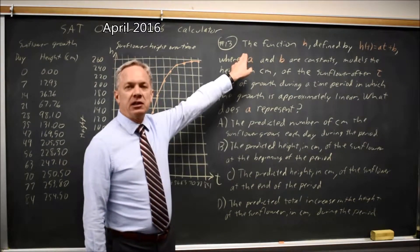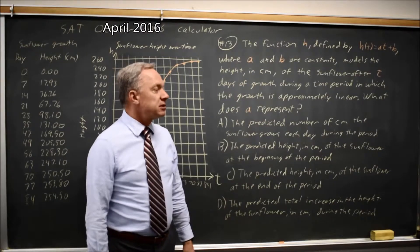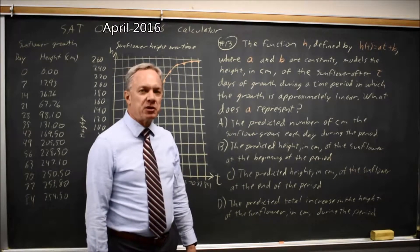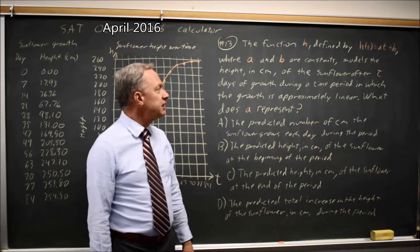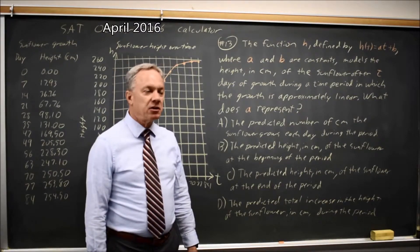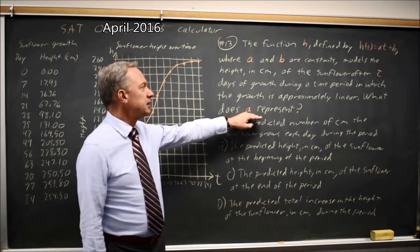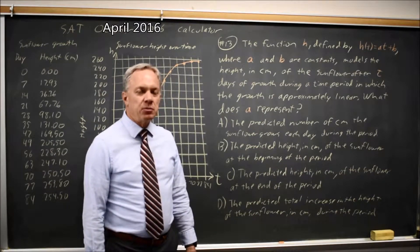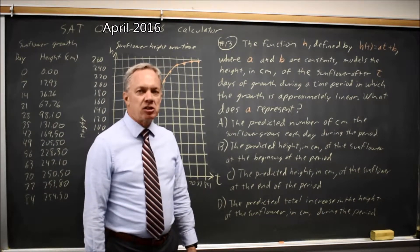h of t equals at plus b, where a constant models the height in centimeters of the sunflower after t days during a time period where the growth is approximately linear, and they're asking what a represents. In h of t equals at plus b, a is the slope.